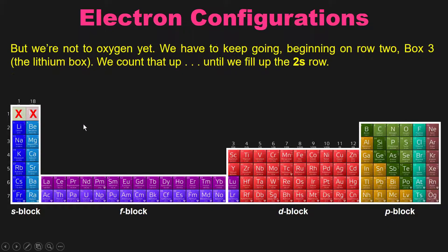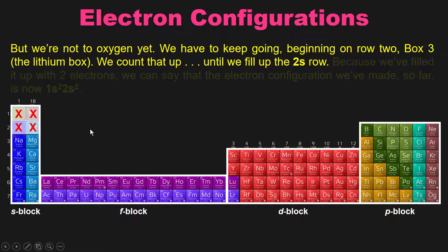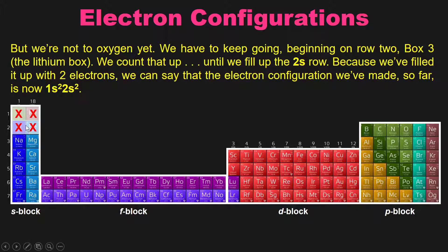But obviously, we're not to oxygen yet. We have to keep going with the next element, box 3, lithium. So we'll start right here at box 3, the lithium box. This is the 2s row. So we'll continue going here. We go 2s1 and then 2. So because we filled up this row with two electrons, we can now say that the electron configuration that we've made so far is 1s2 for this first row, and then 2s2 for the second row.